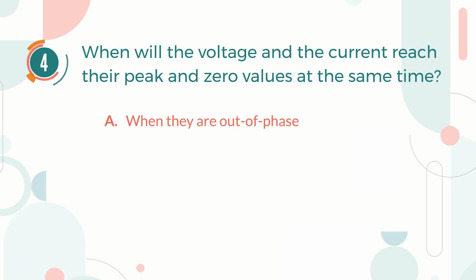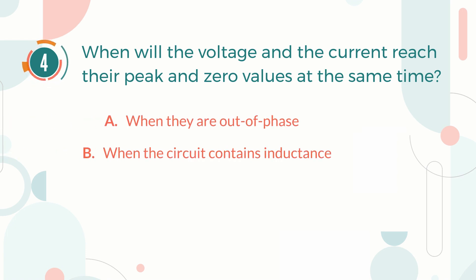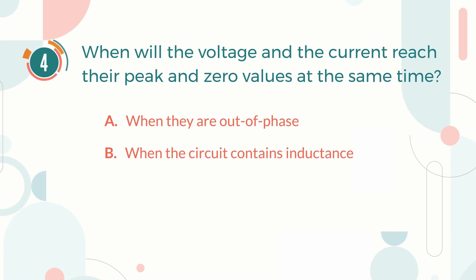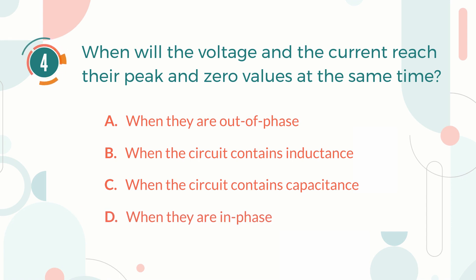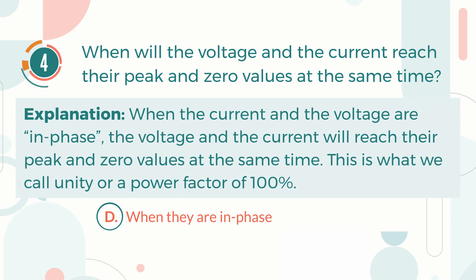Number four: When will the voltage and the current reach their peak and zero values at the same time? A) When they are out of phase, B) When the circuit contains inductance, C) When the circuit contains capacitance, D) When they are in phase. The correct answer is D, when they are in phase. When the current and the voltage are in phase, the voltage and the current will reach their peak and zero values at the same time.